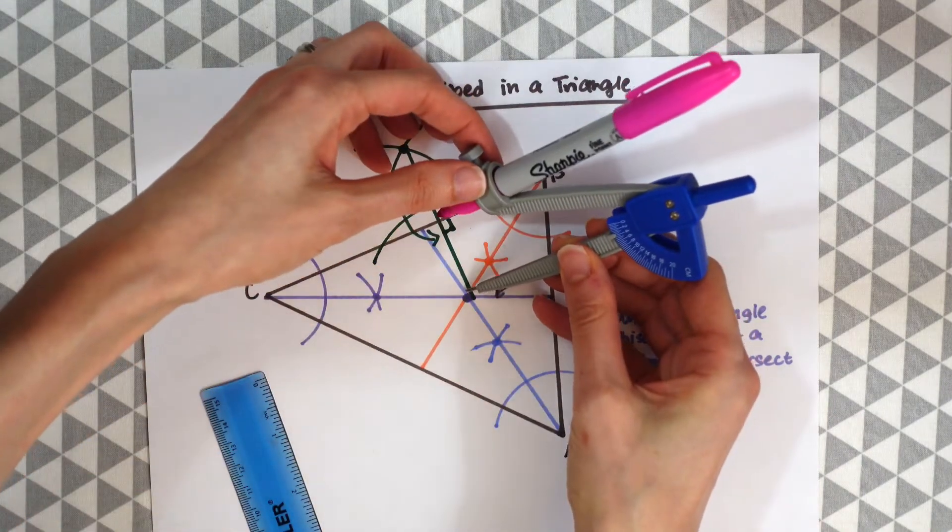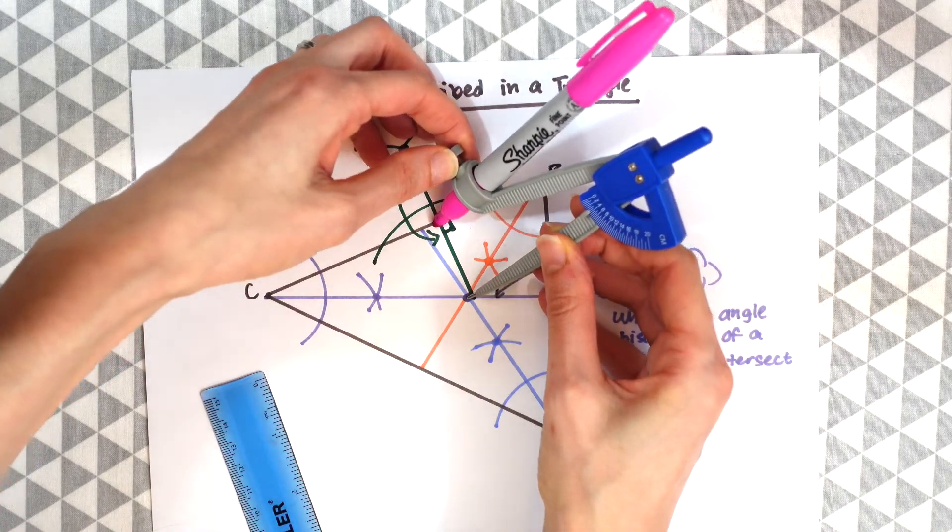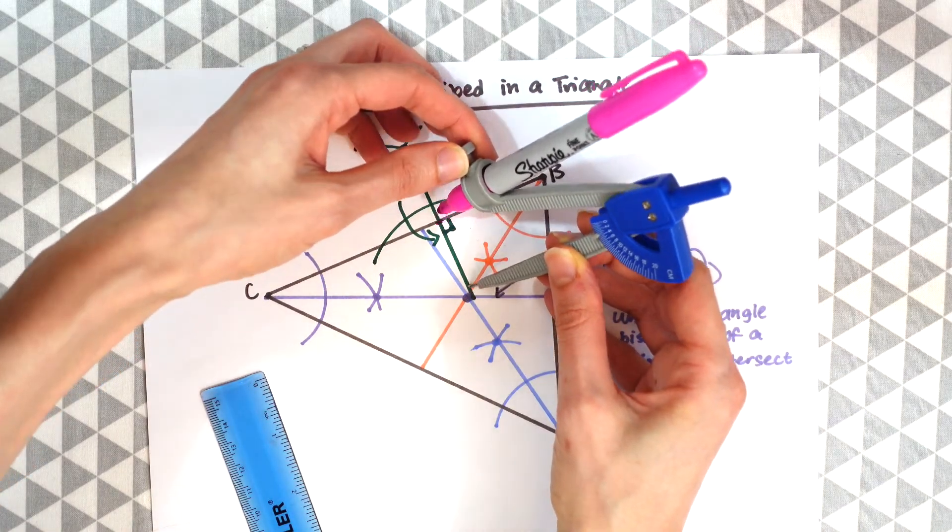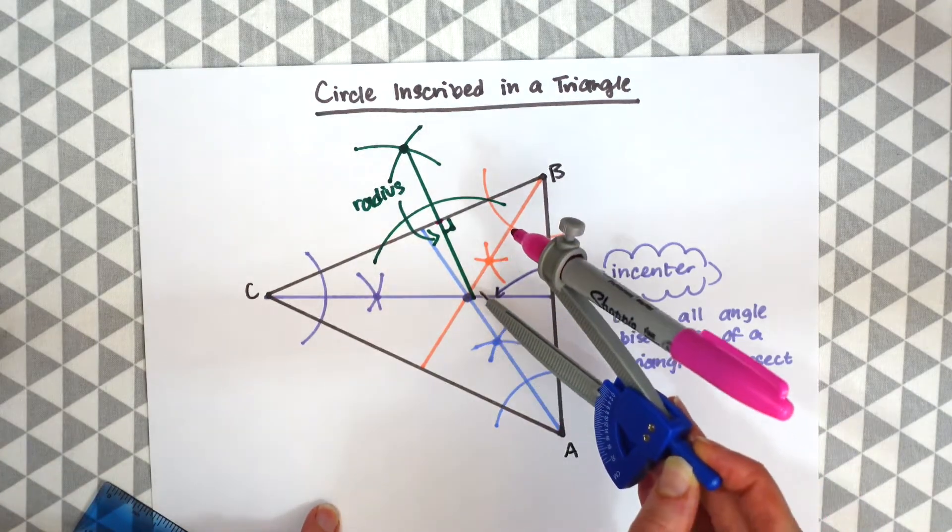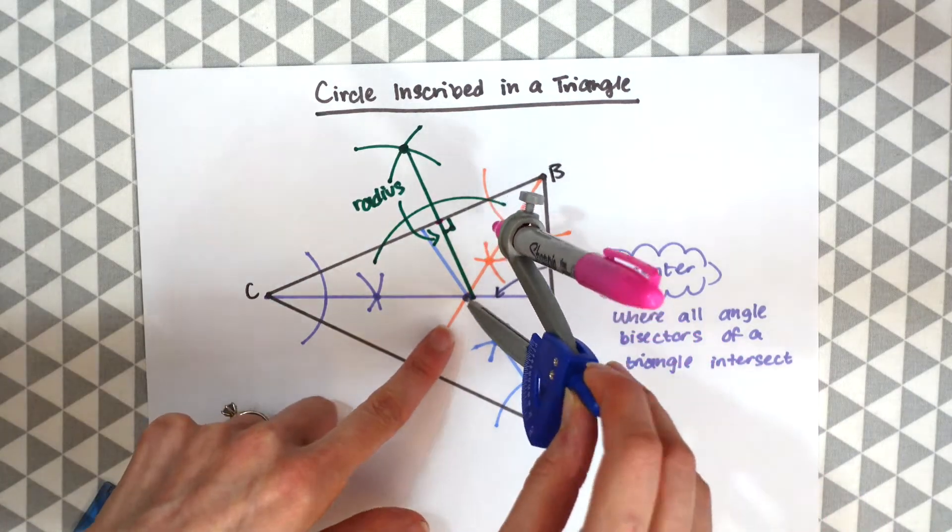So now we're going to measure our radius from the incenter to the edge of the triangle which is about here and then we're just going to make a circle within our triangle.